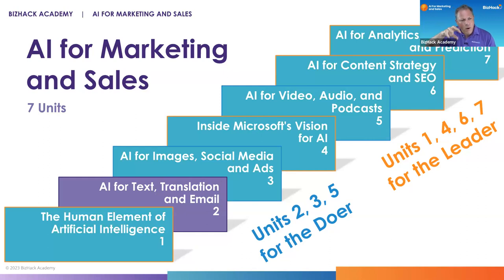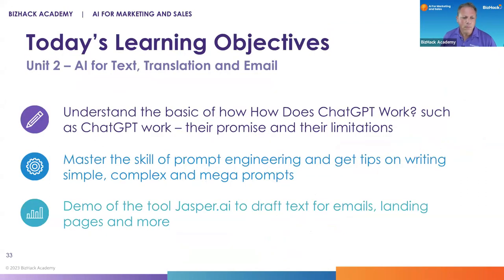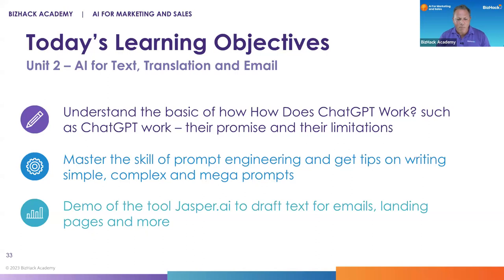We think all of this is important for both doers and leaders. Today we're focusing on very micro skills around how to prompt so that you get the best output from ChatGPT and tools like it. The learning objectives today are understanding the basics of how ChatGPT works, mastering prompt engineering with tips on writing simple, complex, and mega prompts, and doing a demo of Jasper.ai to draft text for emails, landing pages, and much more.